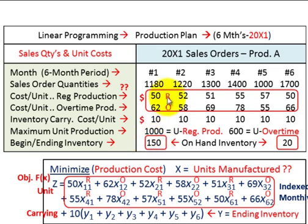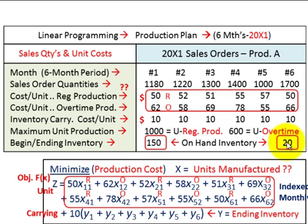We also have some inventory constraints. In the first month we're going to have a beginning inventory of 150 units of product D. At the end of the period — at the end of the six months — we're going to require at least 20 units in ending inventory for product D.